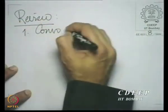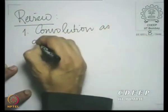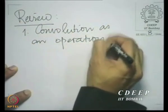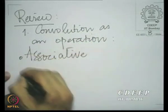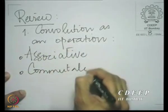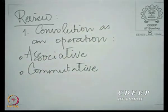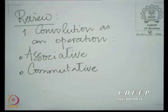We had looked at convolution as an operation in its own right, and we had seen that convolution is associative and commutative. A specific implication of these two properties is that because of the associativity of convolution, when I have two systems connected in cascade, they can be replaced by a single system with an impulse response given by the convolution of the impulse responses of the two systems in cascade. The consequence of commutativity was that you could interchange the order of the two LSI systems without affecting the input-output relationship.